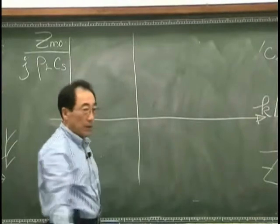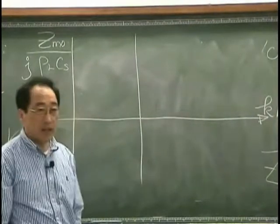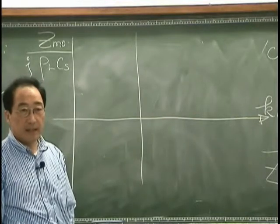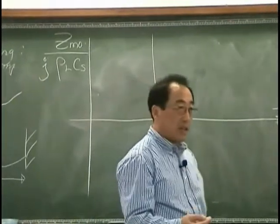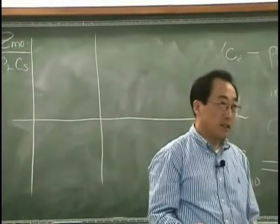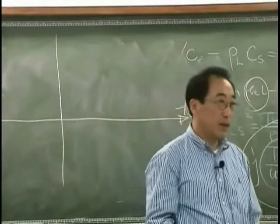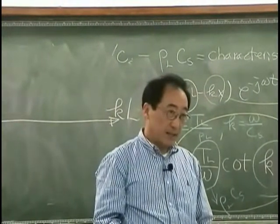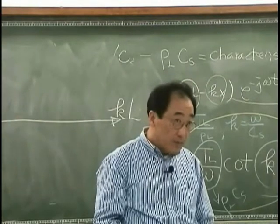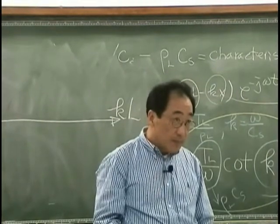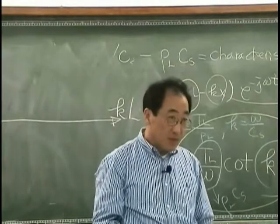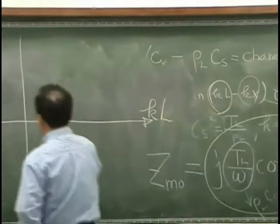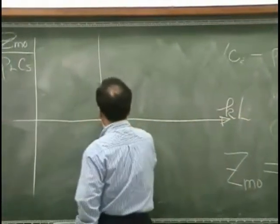What is the value of cotangent KL at π? Cotangent KL is the inversion of tangent KL, and everybody knows the value of tangent π. What is tangent π? Zero. So at π, we have a zero.